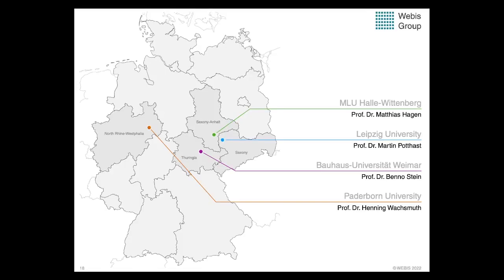So who are we? I'm part of Webis, based in Leipzig — you can see me second from the top. There's also Matthias Hagen in Halle, working on information retrieval and big data. In Weimar, Professor Benno Stein works on AI technology, data analytics, information retrieval, and natural language processing in the direction of argumentation. And at Paderborn University, Henning Wachsmuth works on computational social science and argumentation. The four of us have been working closely together for more than a decade, starting together in one place in Weimar.